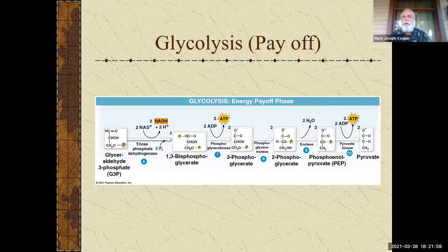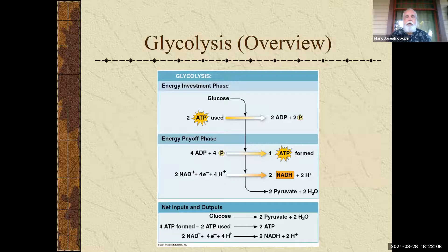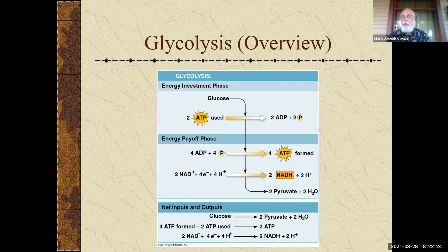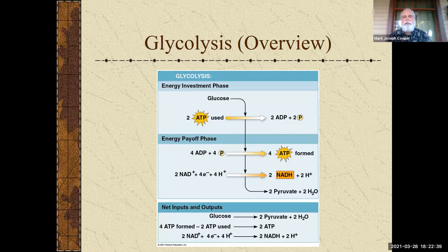The net gain of products out of glycolysis — you want to be careful with this. It's two, two, and two: two pyruvates, which are sugars that still have some energy and will go further along the cellular respiration process; two ATP net — we spent two ATP going in and got four out, so we net gain two; and two NADHs, which are kind of coupons we will use later.